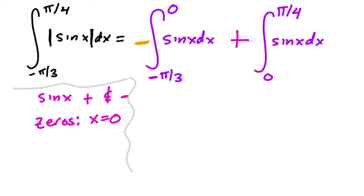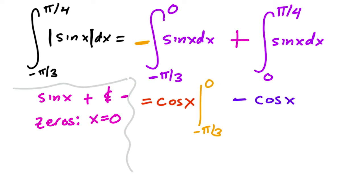Then we find the integral like usual. The antiderivative of sine is negative cosine, and times that negative is just positive cosine of x. So we evaluate positive cosine of x from negative pi over three to zero, and then minus cosine of x from zero to pi over four.